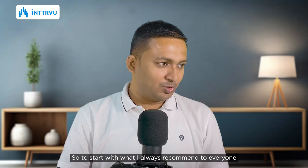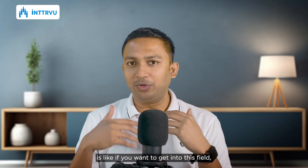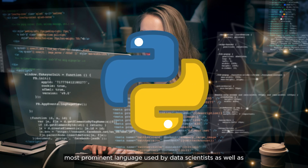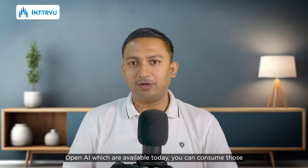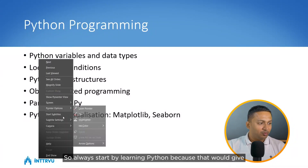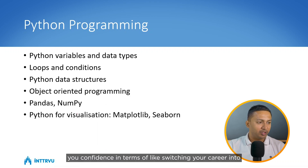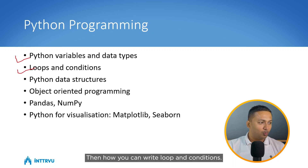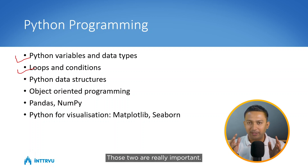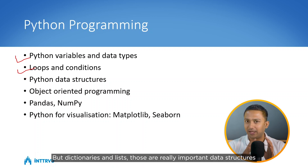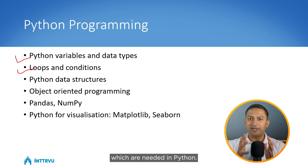To start with, what I always recommend is that if you want to get into this field, you should start by learning Python, because Python is the most prominent language used by data scientists as well as AI experts. Even the generative AI APIs of OpenAI are consumable using Python. You can start by learning Python variables and data types, then loops and conditions, then data structures like dictionaries and lists, which are really important.